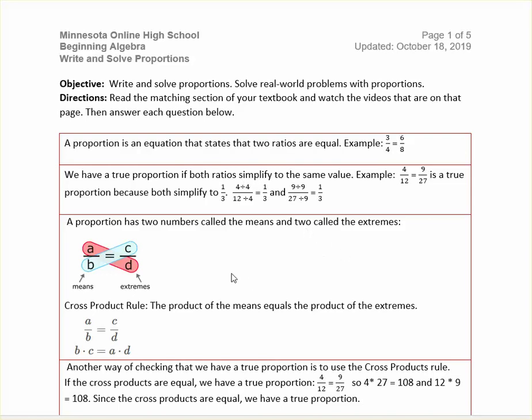Hello, this is Ms. D.B. In this video, we are going to write and solve proportions. So what is a proportion? A proportion is an equation that states that two ratios are equal. For example, 3 over 4 equals 6 over 8, or 3 to 4 equals 6 to 8. We talked about ratios in an earlier assignment, and if you have two ratios that are equal to each other, you have a proportion.